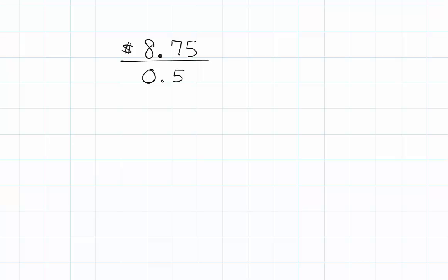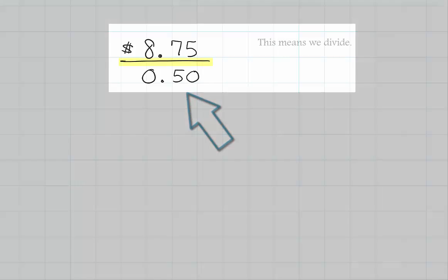We want to take $8.75 and divide it into groups of 50 cents. Remember, 0.5 is actually 50 cents if you look at it in terms of money.